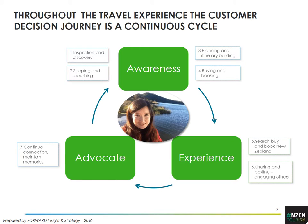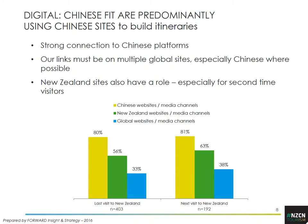Chinese are using digital throughout the travel experience — to build awareness, to enhance the experience, and then to advocate to other people about what they've done and why they should do it. There is a very detailed digital journey map available on how Chinese visitors plan and travel their trip. This shows that on their last visit and next planned visit to New Zealand, independent Chinese travellers are mainly using Chinese-based websites and media channels, which is why it's really important that we have a mechanism to be there.